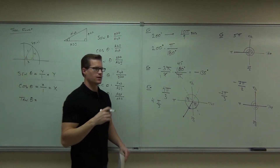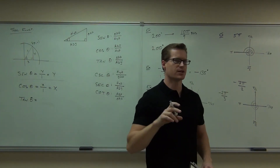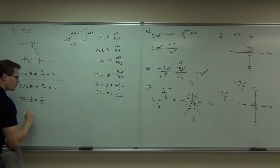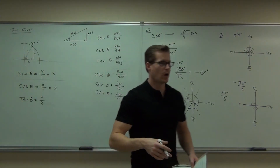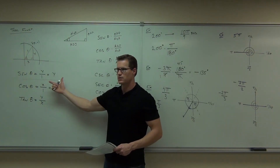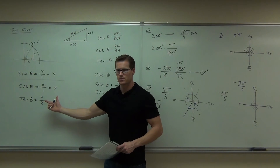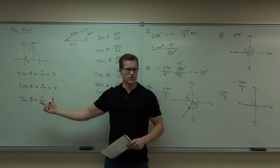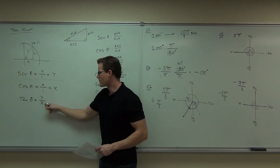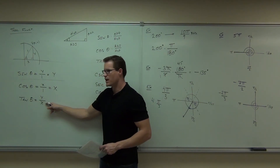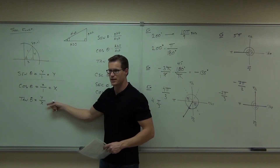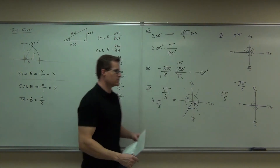Tangent is opposite over adjacent, so in our case that's y over x. This also leads us to our identity: if y equals sine and x equals cosine, then tangent equals sine over cosine. So we get our first identity: tangent equals sine over cosine. That's pretty easy to see.